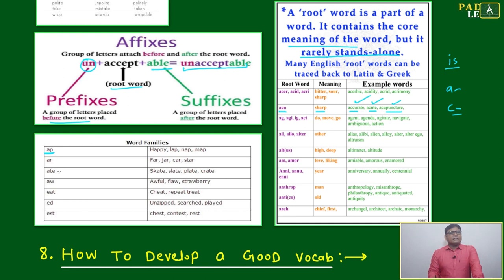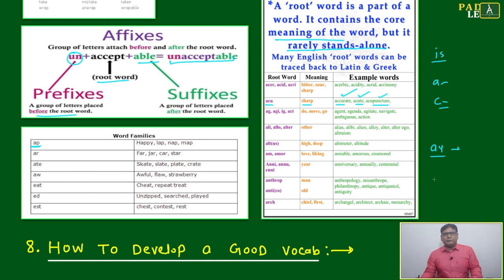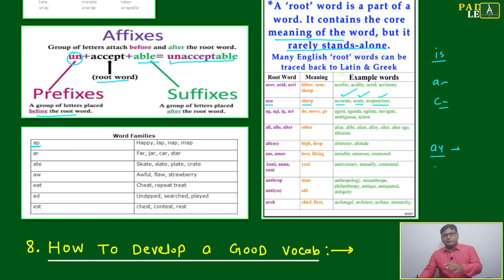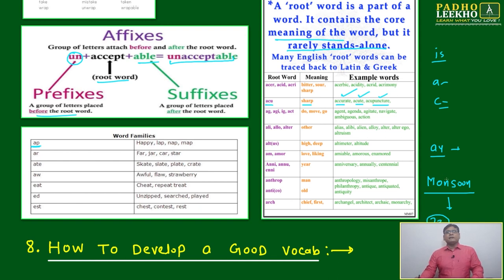Word families are another category I mentioned. You can develop vocabulary in a fun way. For example, take the pattern 'AY' — how many words can we make? It will start with Sunday, Monday, holiday, day. Try to write 20 words that either start with, end with, or have 'AY' in between. These small, fun activities help develop vocabulary.